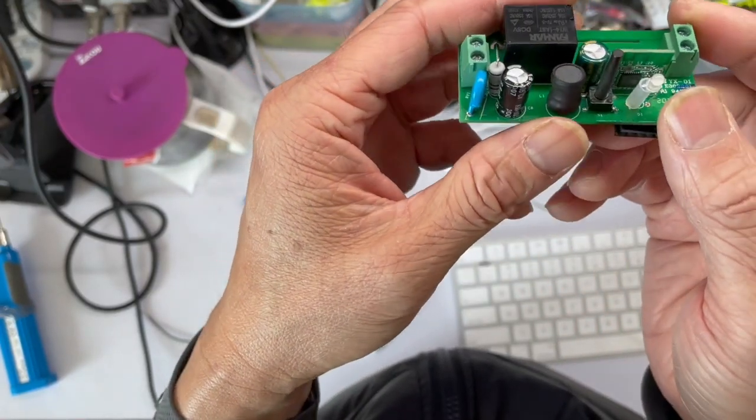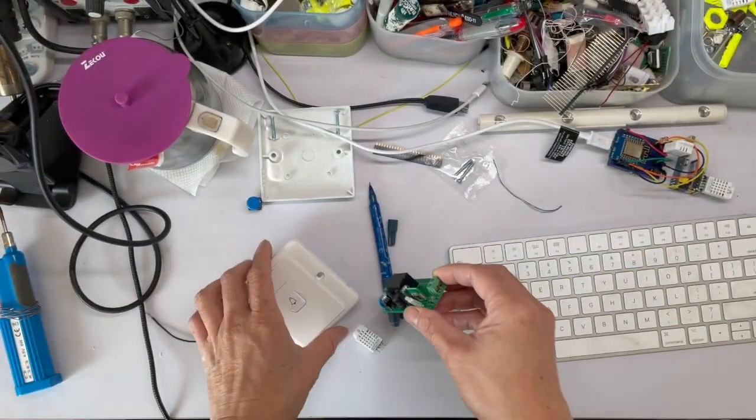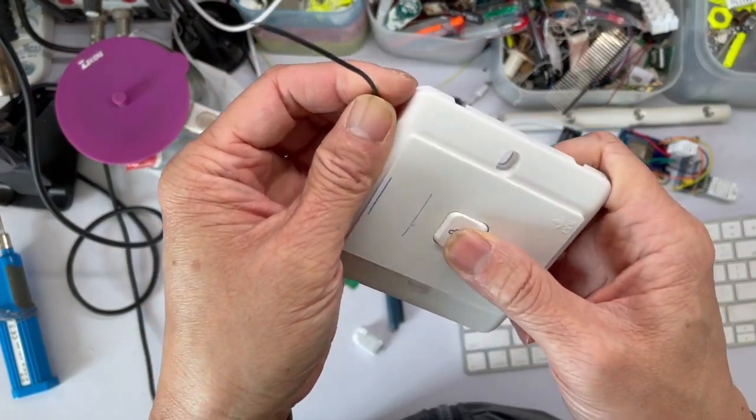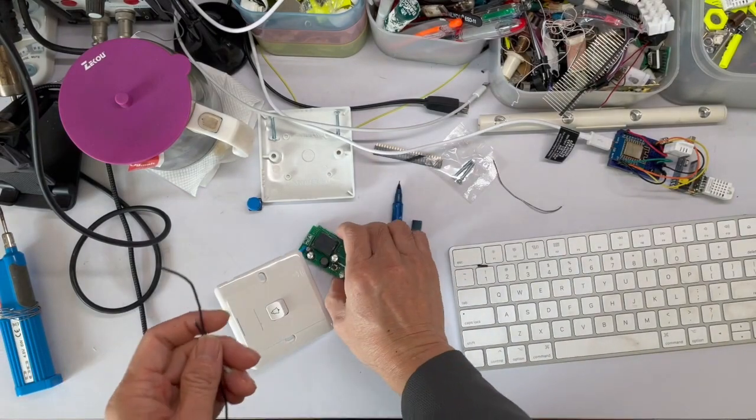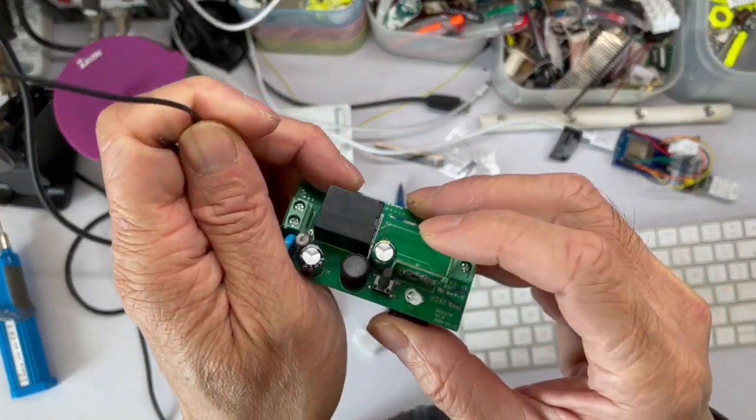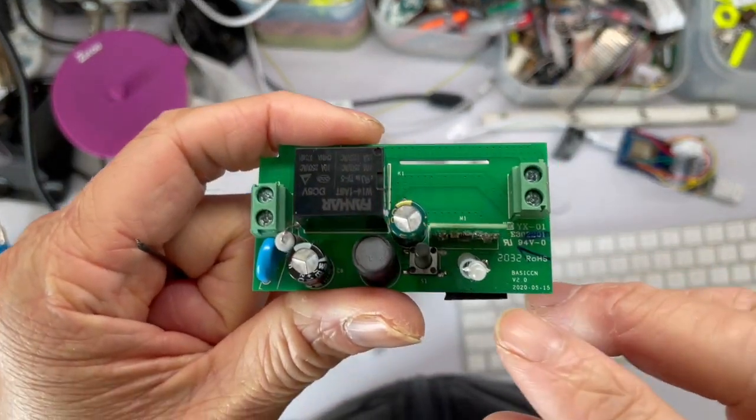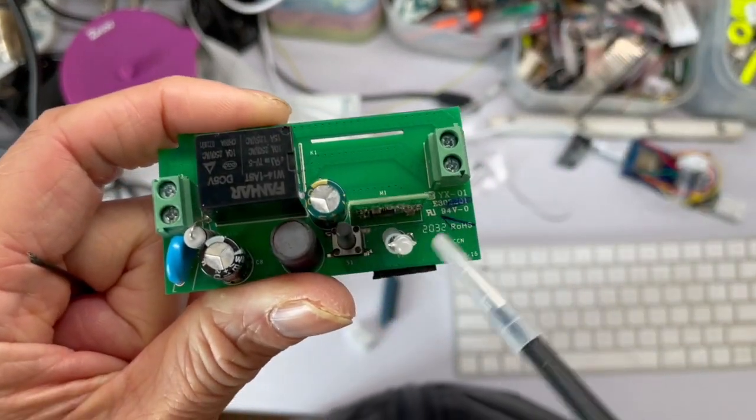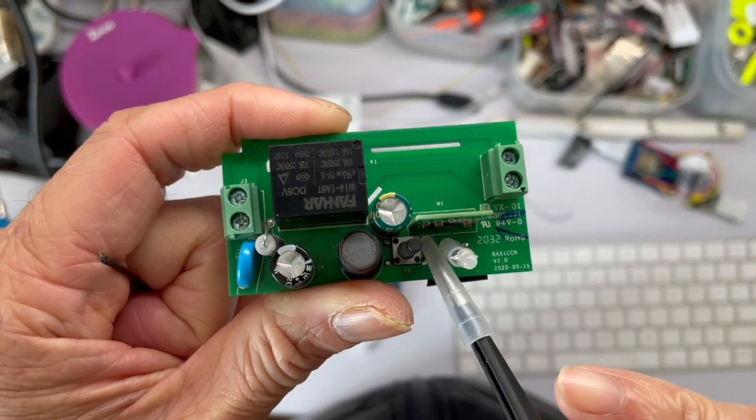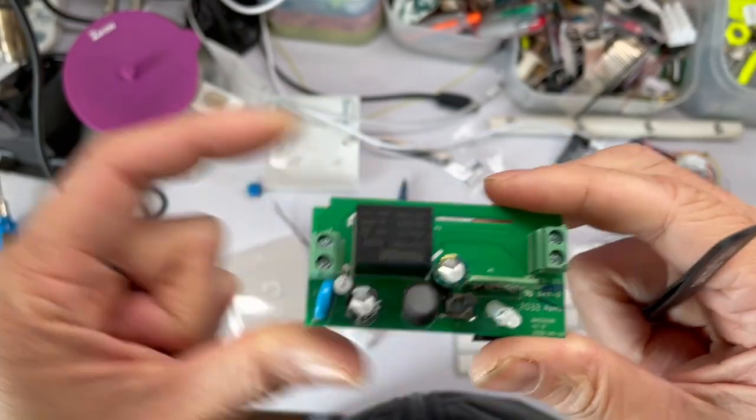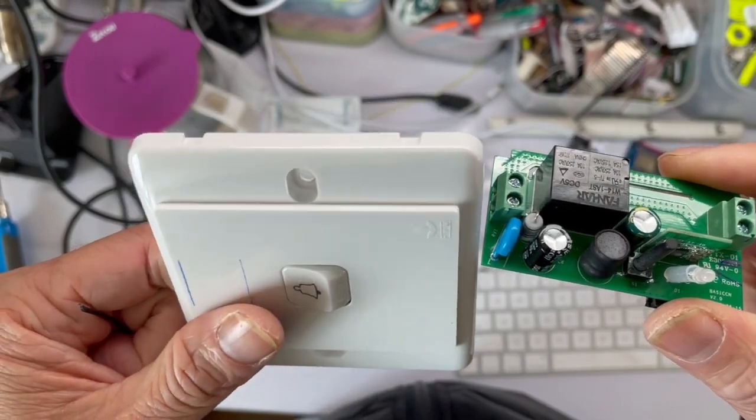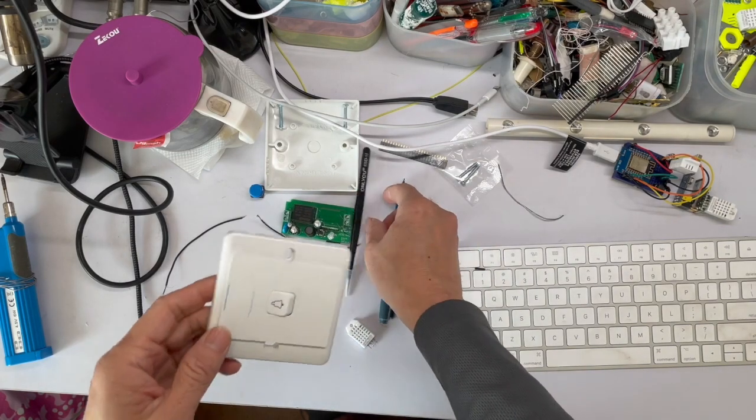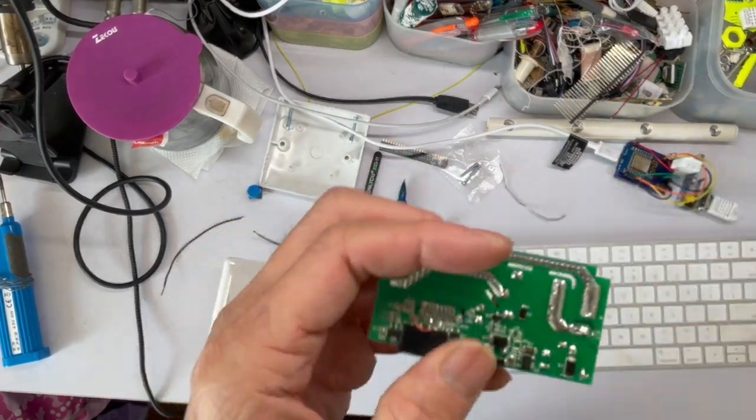The next thing we need to do is solder the wires from this regular doorbell switch to connect to the built-in button. We can solder from these two contact points here - one wire each that connects back to this doorbell switch which will become our light switch.